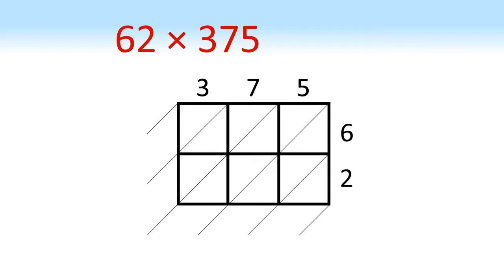Up here we've drawn a grid. It's got as many rows as there are numbers in 62 and as many columns as there are numbers in 375. We could do these the other way around and have 62 on top, 375 on the side. It doesn't matter, you'll get the same result.